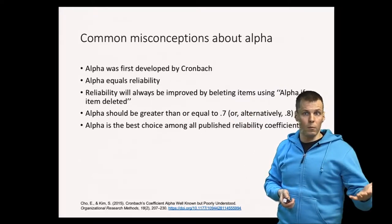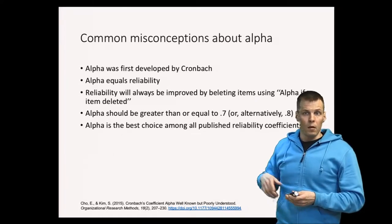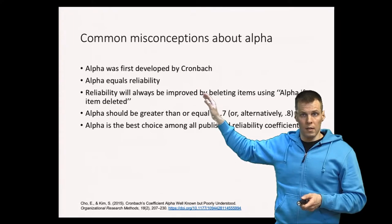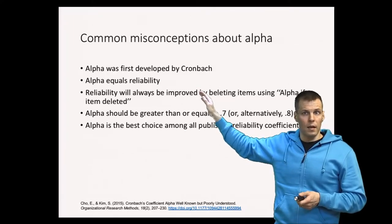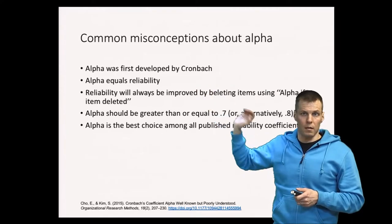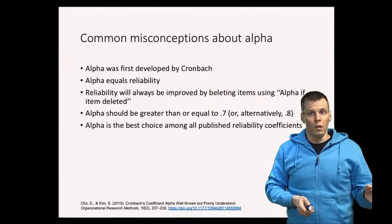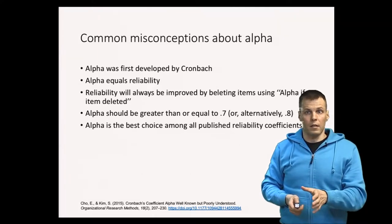So that's why we call it coefficient alpha instead of Cronbach's alpha. Also alpha does not necessarily equal reliability. It is an estimate of reliability under the assumptions of classical test theory. If those assumptions don't hold then alpha can underestimate reliability.